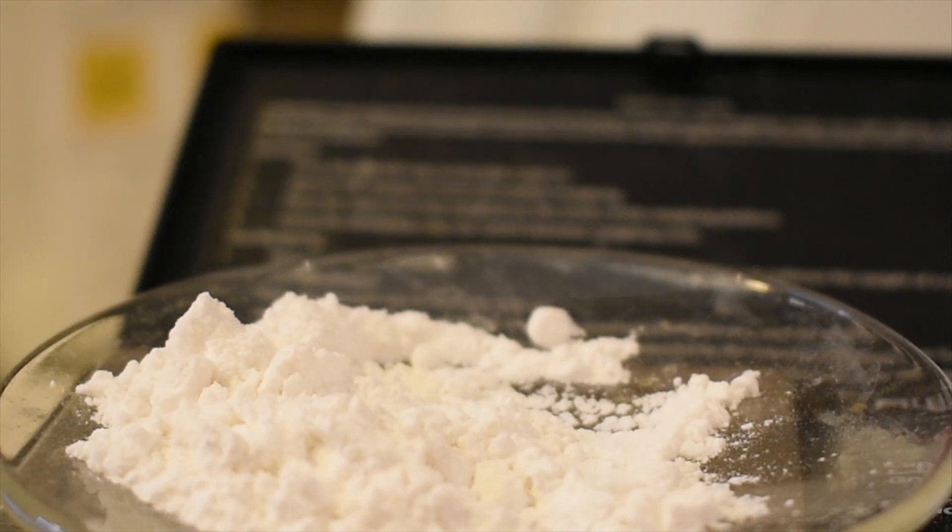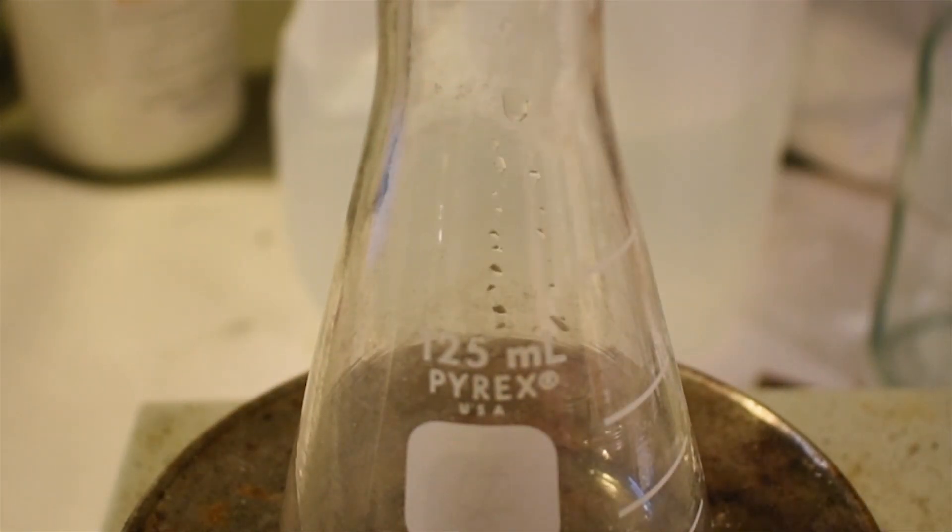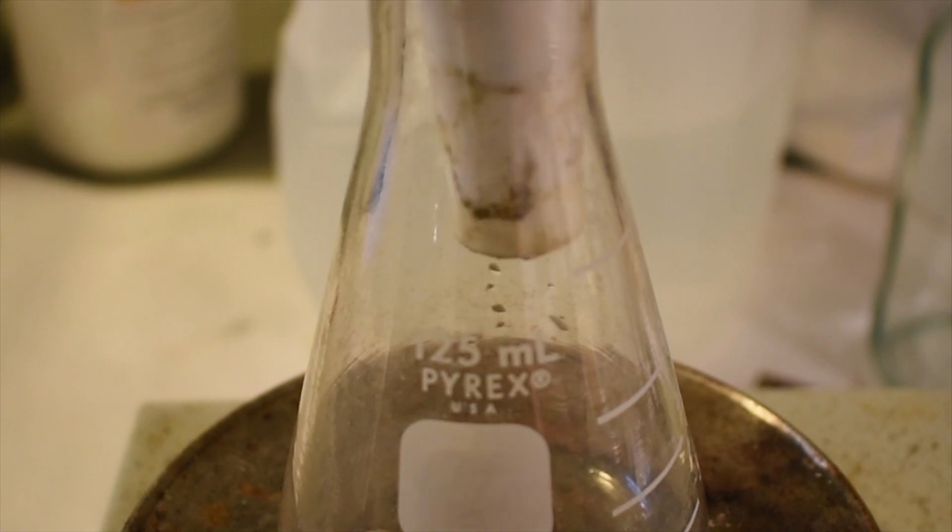So those are both in 5 gram portions and we are going to put those both into a flask. Here, I have a 125 milliliter Erlenmeyer flask. And so what I'm going to do is just put a funnel in here and it doesn't really matter which order you do it in.